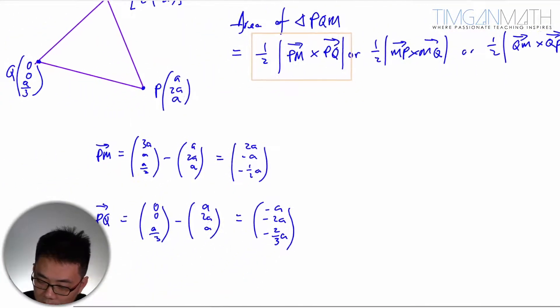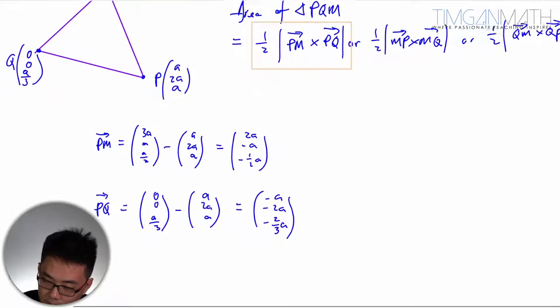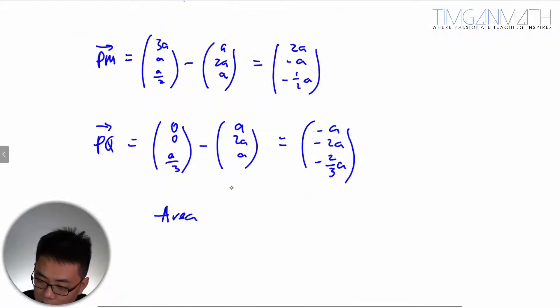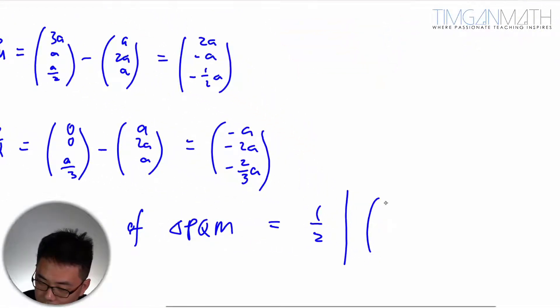So the area. Area of minus 2A. I'm going to say area of triangle PQM is half PM. So it's 2A, minus A, minus half A cross with minus A, minus A, minus 2/3 A.